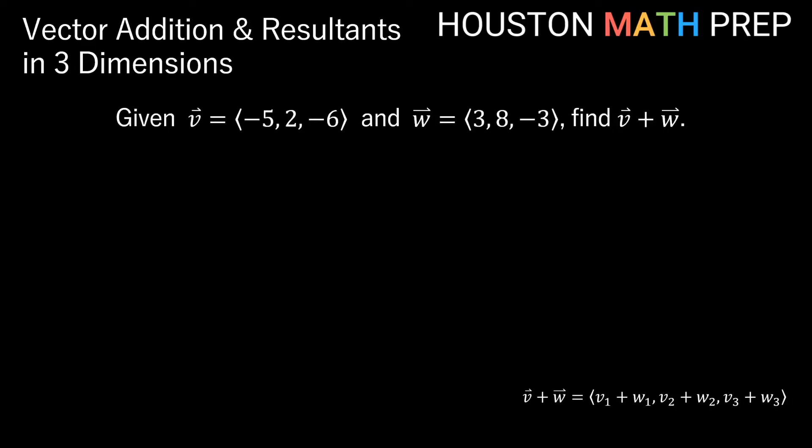We'll do one quick example of finding a resultant given two vectors. So here if we're given that vector V is negative 5 comma 2 comma negative 6 and vector W is 3 comma 8 comma negative 3, we're asked to find the vector V plus W. All we simply need to do to find V plus W is add them component-wise.